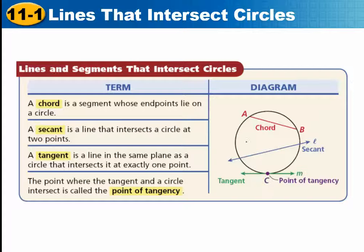All right, here's some of the important words that you need to know. A chord, it's right here. It is a segment whose endpoints lie on the circle. It's a line segment. It has two endpoints. The endpoints are on the circle. A secant is a line that intersects a circle at two points. It's a line. It goes on forever in both directions. It goes through the circle at two points.